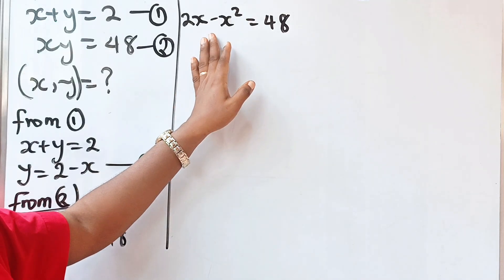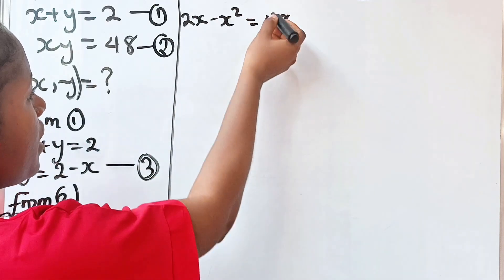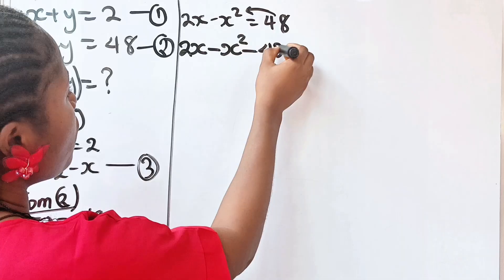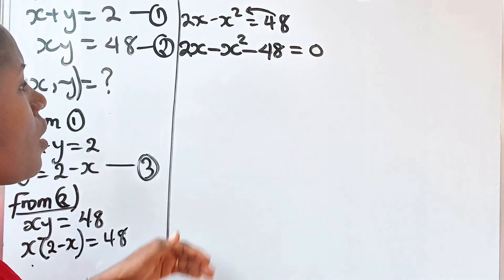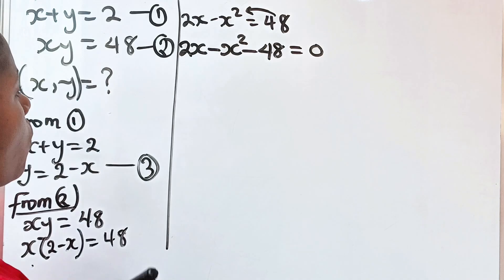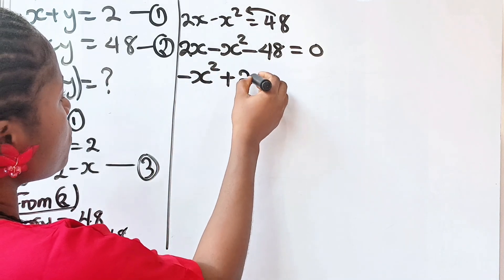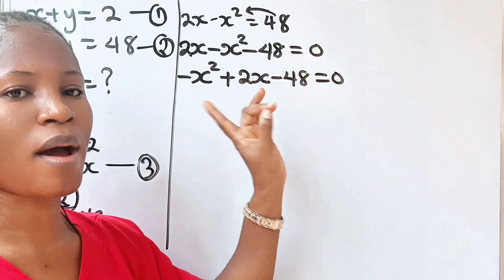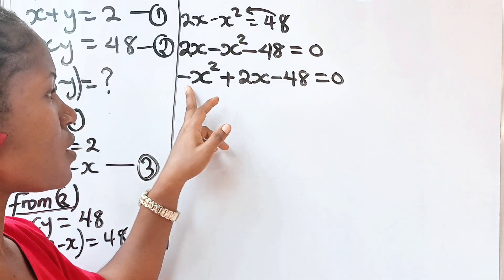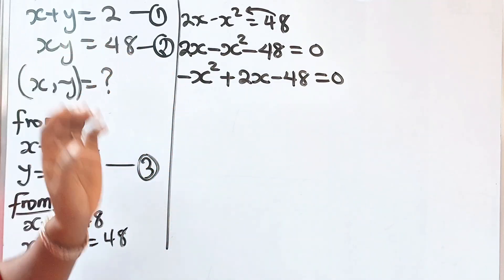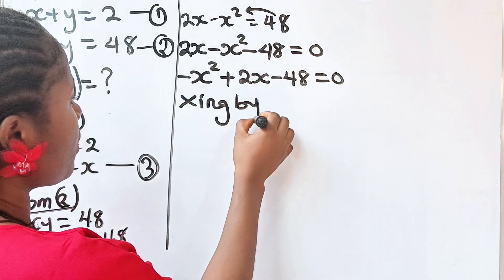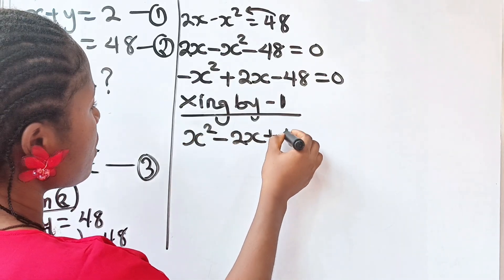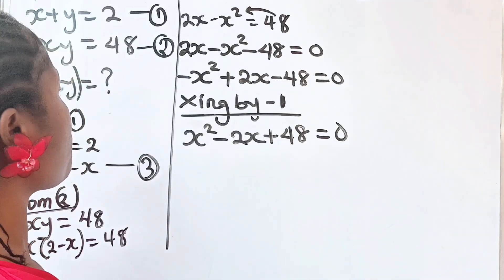This looks like a quadratic equation, so let's arrange it properly. Bringing everything to one side, we have 2x minus x squared minus 48 equals 0, which rearranges to minus x squared plus 2x minus 48 equals 0. Now let's multiply through by minus 1 to remove the negative leading term, giving us x squared minus 2x plus 48 equals 0.